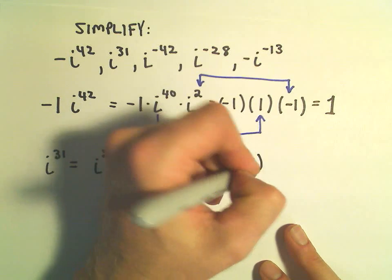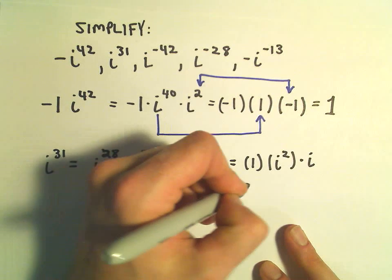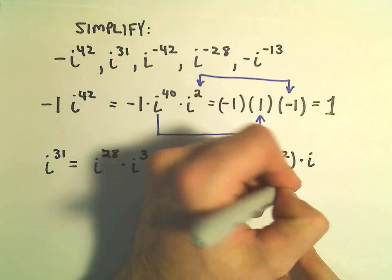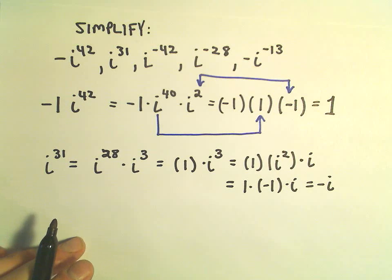And again, the way I really write this is, now this is kind of a small exponent, I just break it down. So i to the third, that's i squared times i. But i squared we said that's negative 1 times i, and that'll simply leave us with negative i.